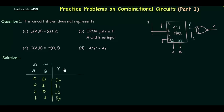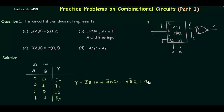Now we find the Boolean expression for y. y = a'b'·i0 + a'b·i1 + ab'·i2 + ab·i3. From the problem, the values of i0, i1, i2, and i3 are already given. i0 and i3 are 0, and i1 and i2 have the value equal to 1.